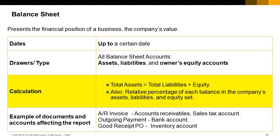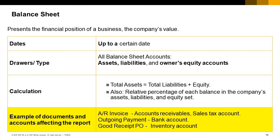In addition, the relative percentage of each balance in the company's assets, liabilities, and equity is presented. The equity section includes the profit for the period, which is calculated while the report is being composed to represent the summary of the profit and loss of the period. Some examples of documents and their related accounts which affect the report are: accounts receivable and sales tax accounts in an AR invoice, the bank account in an outgoing payment, and the inventory account in a goods receipt PO.